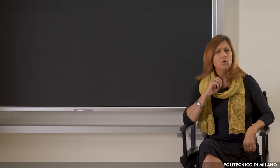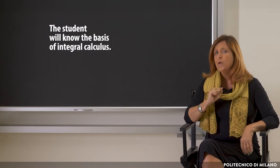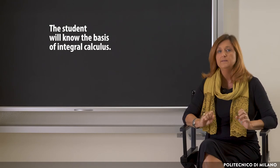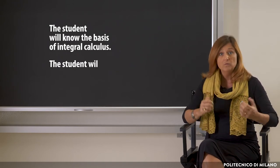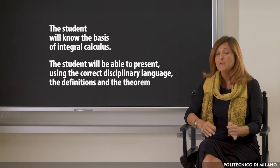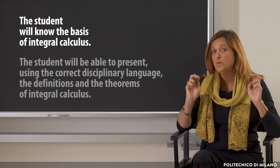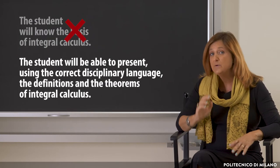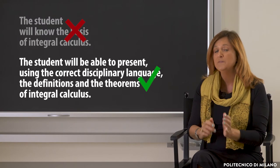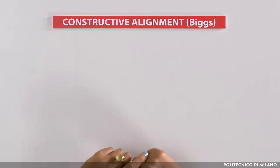Let's try an example. I could simply say that the student will know the basis of integral calculus. Or I could venture into a more articulated Intended Learning Outcome and say, for example, the student will be able to present, using the correct disciplinary language, the definitions and the theorems of integral calculus. If I just say that students have to know something, I won't be able to observe it. This is the reason we need to formulate Intended Learning Outcomes in terms of observable performance.